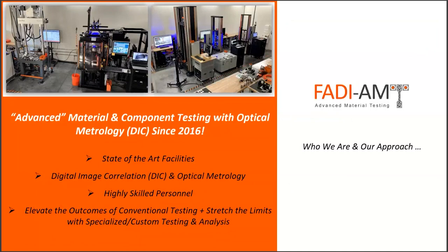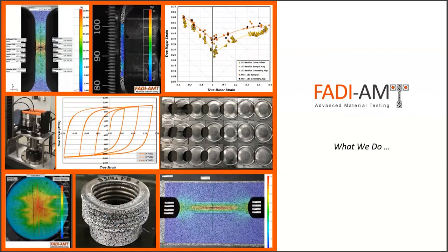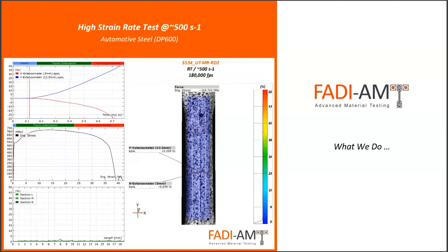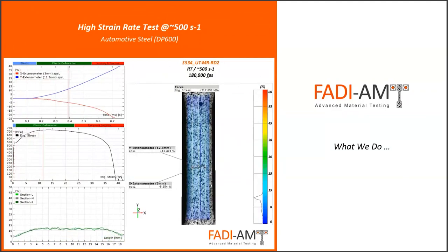We do that through a team of highly skilled personnel that are really interested in material deformation. When we do testing, we don't do it just for the sake of producing results, but rather to understand material deformation and behavior. We try to elevate the outcomes of conventional testing by going beyond standard tests to customize testing solutions so that we can address difficult material testing problems. The types of tests we perform range from the very simple tension tests to more complex bring-back tests and formability testing that we're going to talk about today. We typically like to share a video of the type of tests that we perform, especially the challenging ones.